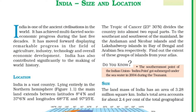The total length of the coastline of the mainland, including Andaman and Nicobar and Lakshadweep, is 7,516.6 kilometers. The countries ranked above India are Russia, Canada, the USA, China, Brazil, and Australia, placing India in 7th position.